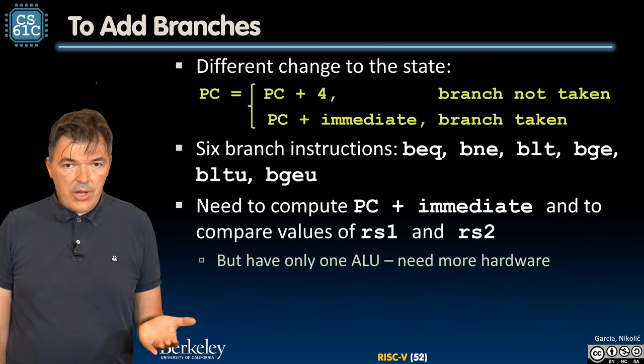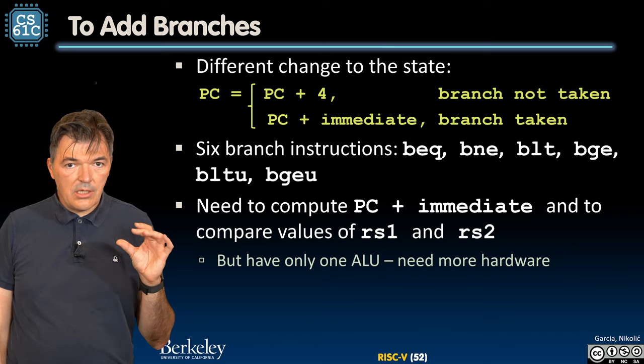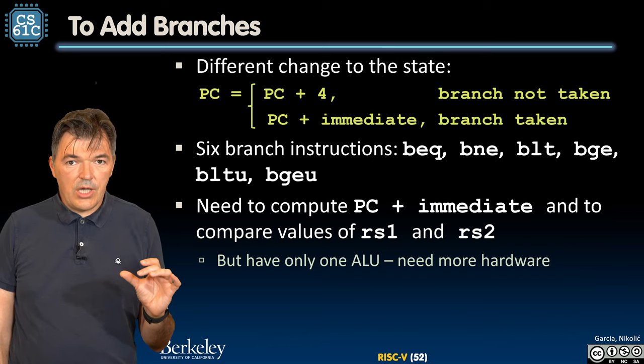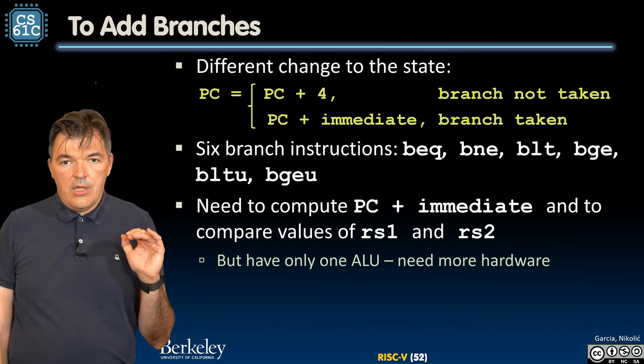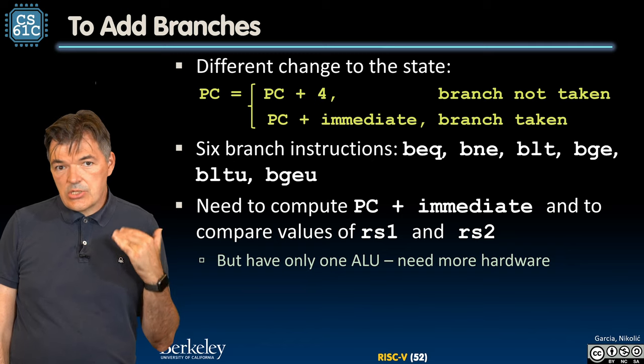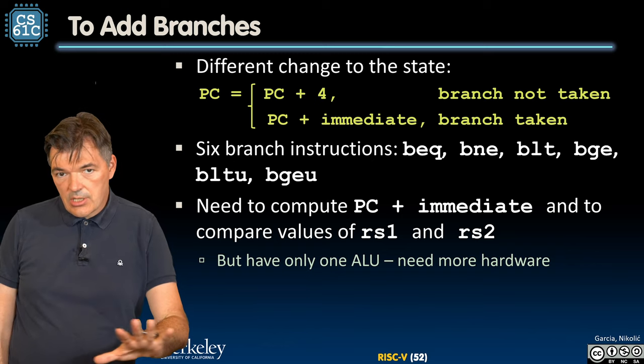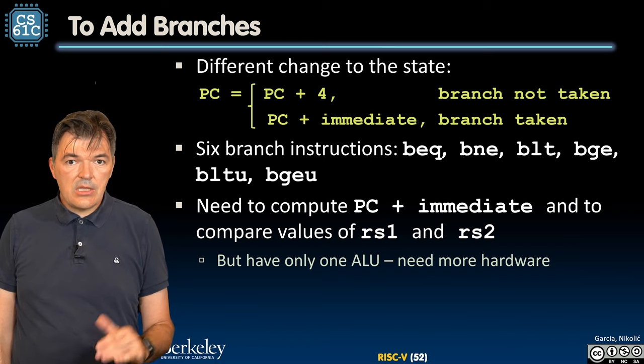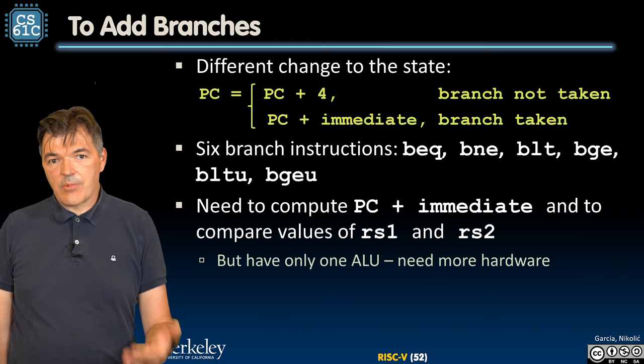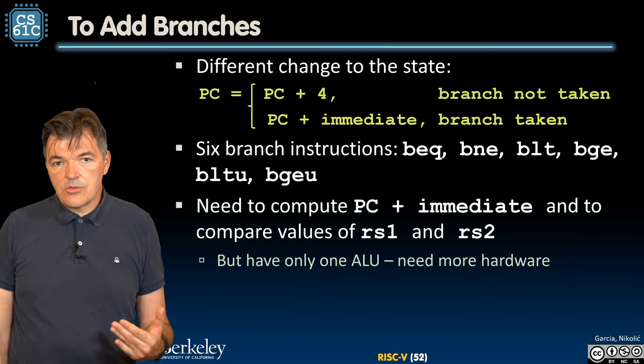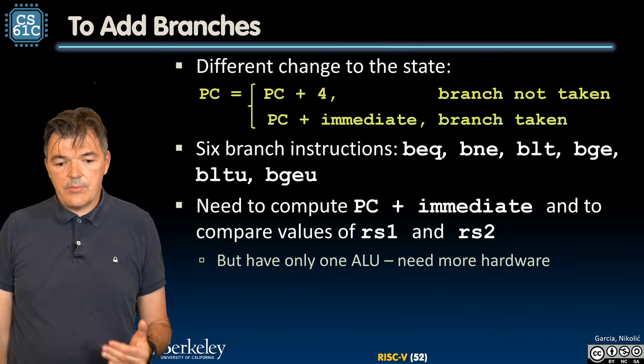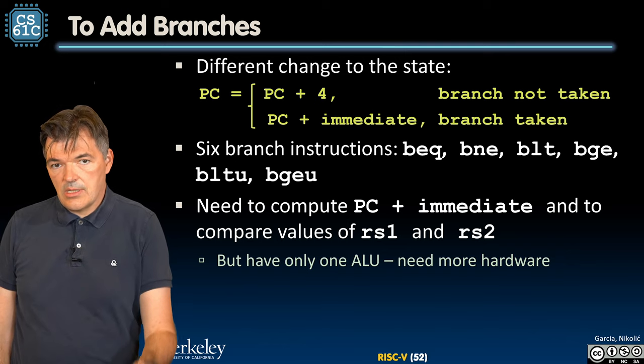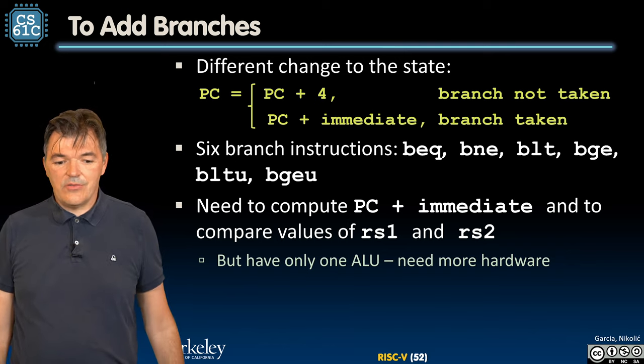So in order to add branches we need to look at what functionality we need to have in our data path. The state change is not by changing the contents of the registers or the memory. The change of state is by changing the program counter. Program counter takes two values after the completion of a branch. It either is PC plus 4 or it is PC plus immediate, and this immediate is of the B type.